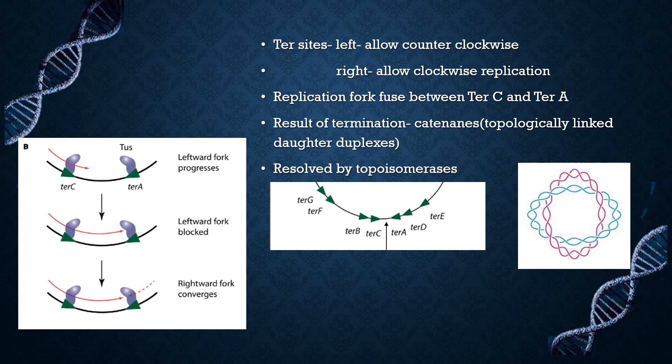Tus protein bound to the right will allow the clockwise replication fork to pass. As a result, replication forks generally fuse between ter sites. Ter sites are not absolutely required for termination — without ter sites, replication is normal and cells are viable, but the termination region is random. The result of termination is catenanes, which are topologically linked duplexes, and they can be resolved by topoisomerases.